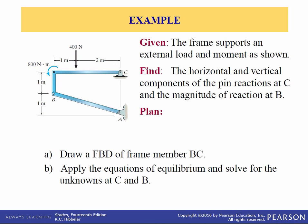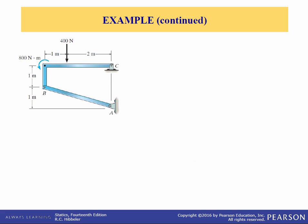Let's do an example. Here we have a frame that supports an external load and a couple moment. Find the horizontal and vertical components of the pin reaction at C and the magnitude of the reaction at B. We have two members here — this L-shaped member BC — and we're going to draw a free body diagram of that and use equations of equilibrium to solve for the answers.